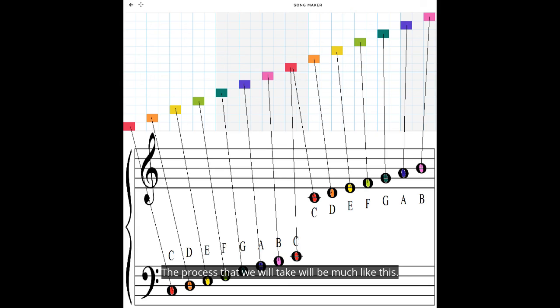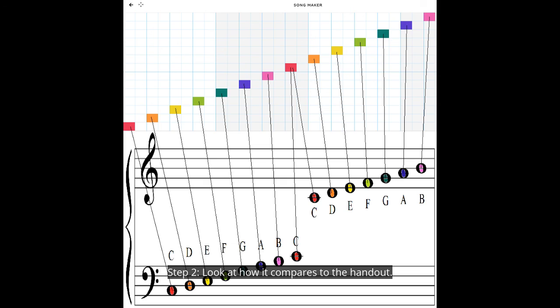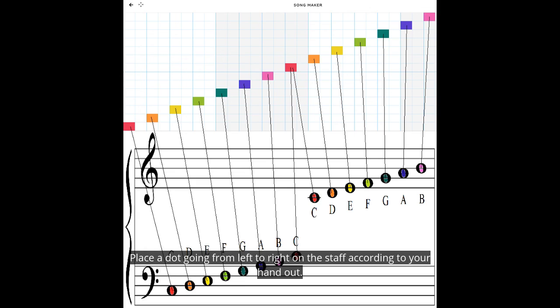The process that we will take will be much like this: Step one, going from left to right, look at the boxes that you inputted into Song Maker. Step two, look at how it compares to the handout. Step three, place a dot going from left to right on the staff according to your handout. Let me show you how to do this using examples I first introduced to you in our last lesson.